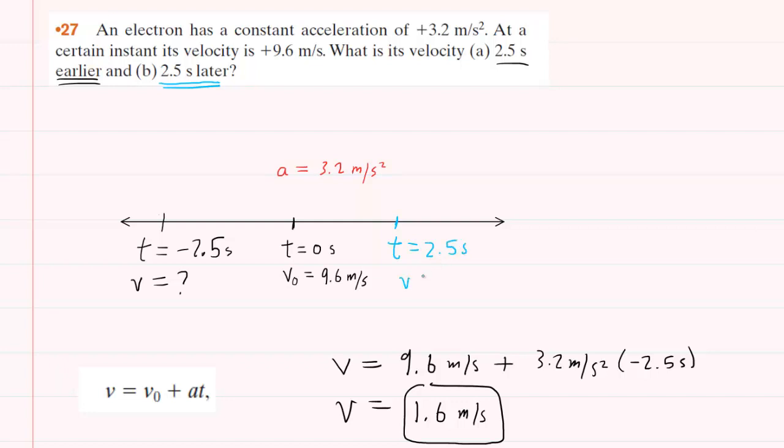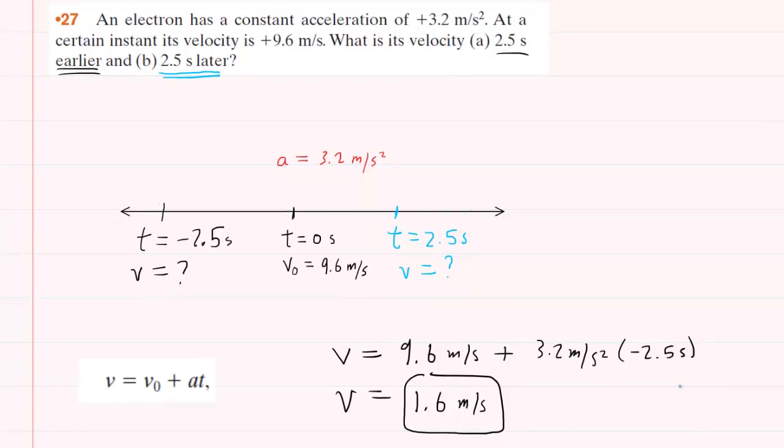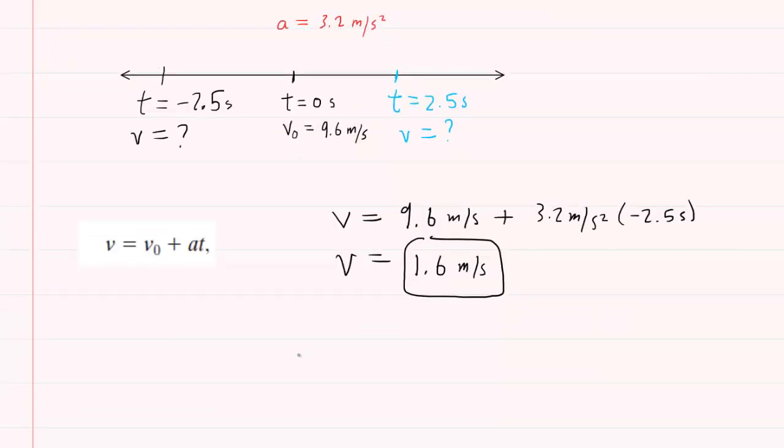Again, we'll be searching for a final velocity in part B. We'll be using the same equation. So we'll come down below here, and we'll have the final velocity equals the initial of 9.6 meters per second, plus the acceleration, multiplied this time by positive 2.5 seconds.